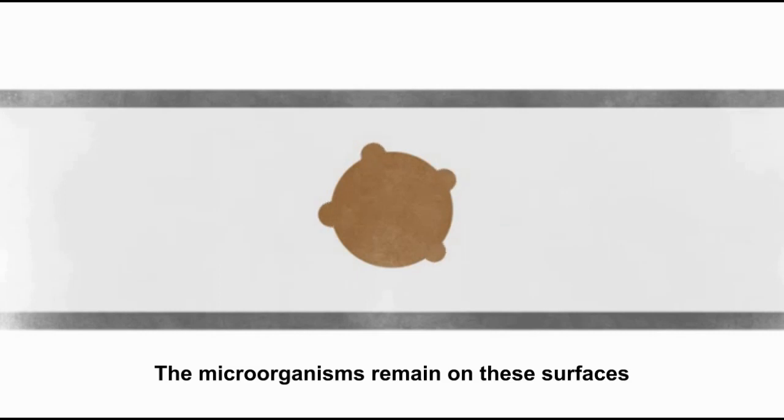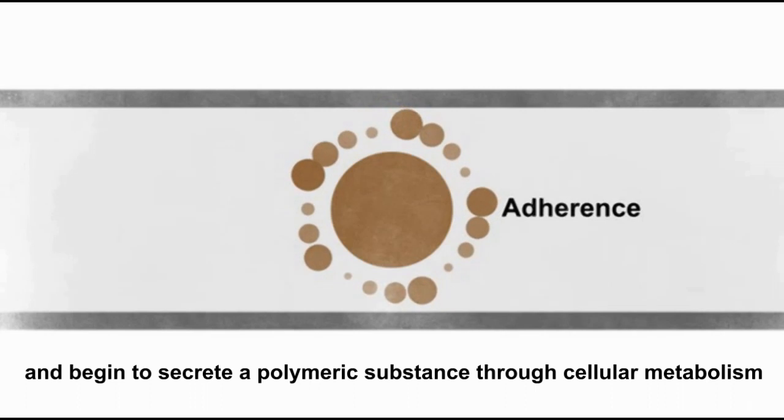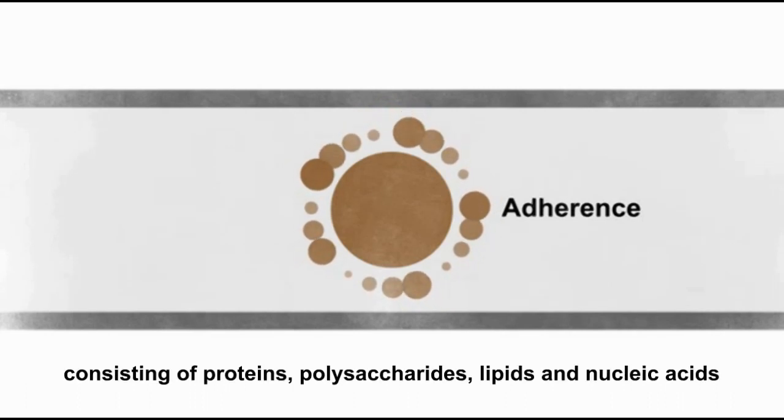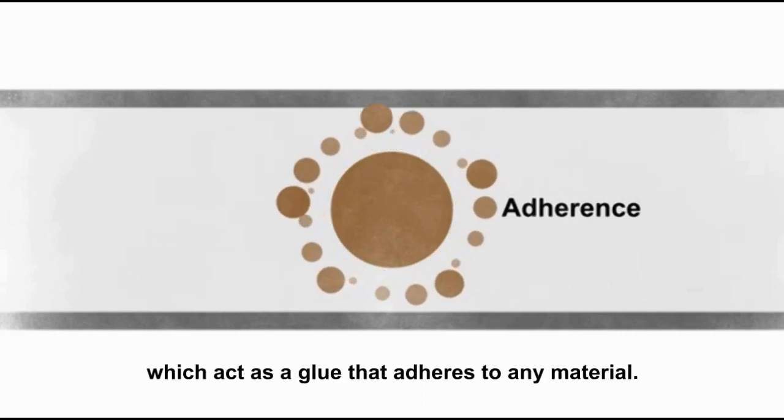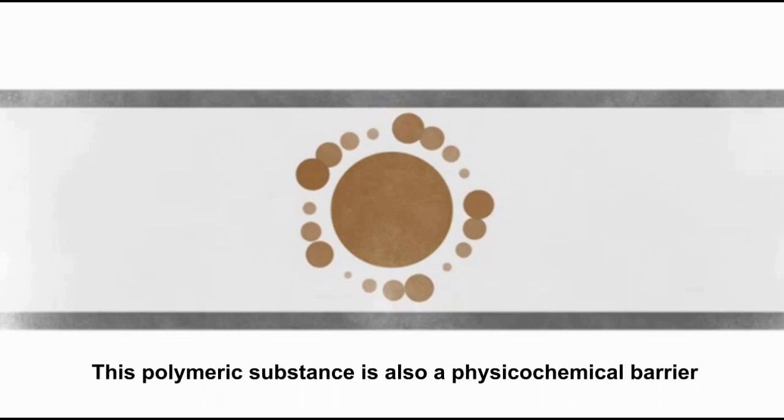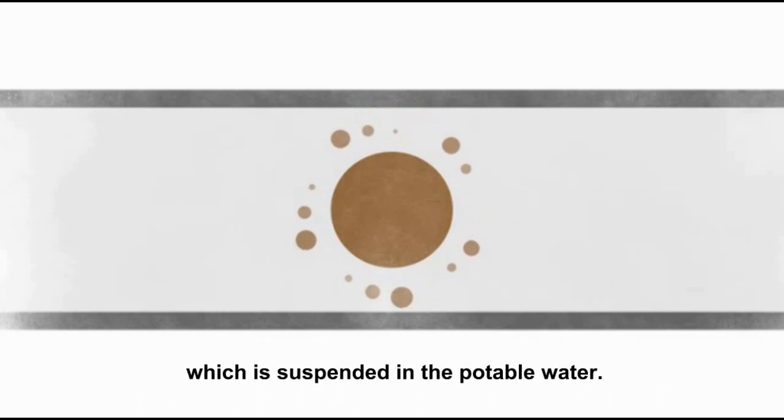The microorganisms remain on these surfaces and begin to secrete a polymeric substance through cellular metabolism, consisting of proteins, polysaccharides, lipids, and nucleic acids, which act as a glue that adheres to any material. This polymeric substance is also a physicochemical barrier against penetration of biocide products such as free chlorine, which is suspended in the potable water.